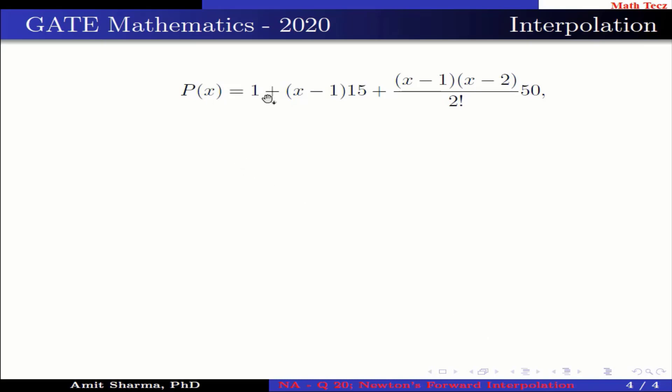This implies P(x) = 1 + (x-1)·15 + [(x-1)(x-2)/2]·50. Here the 2 cancels with 2 in the denominator.